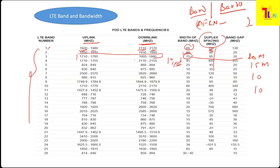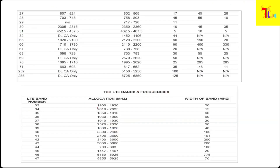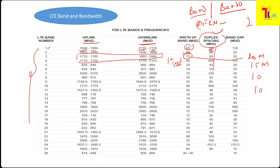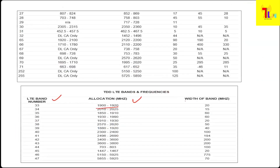In FDD you have downlink and uplink, but in TDD you have only one allocation and no separate downlink and uplink, so there is no duplex spacing either. So for TDD there are three key things: band number, frequency allocation, and bandwidth.